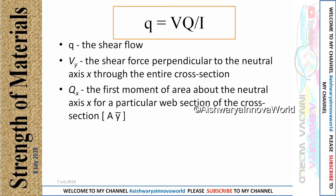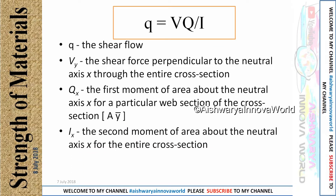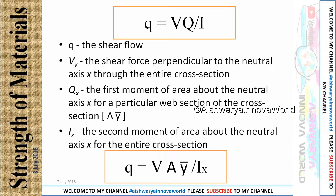Q stands for the first moment of area above the neutral axis about the entire cross-section. The first moment of area is the product of area and the centroidal distance y-bar. So we can write Q equals A times y-bar divided by Ix.